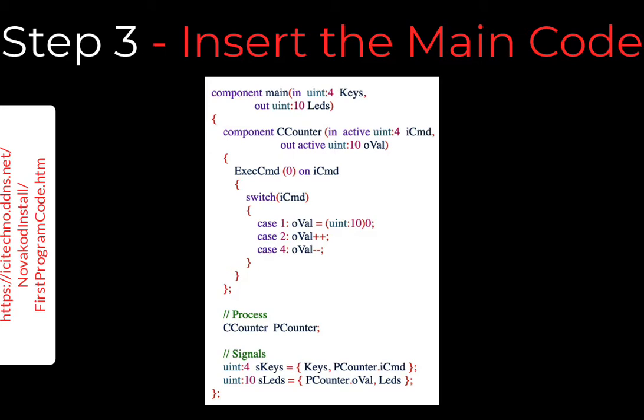Let's have a look at the code. As expected, the main component includes the external ports, the counter component, and the connections. Connections are defined using process and signal declarations. In C++, objects are instances of classes. In PSC, processes are instances of components.